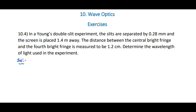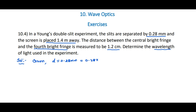Problem 10.4: In Young's double slit experiment, the slits are separated by 0.28 mm and the screen is placed 1.4 m away. The given values are d = 0.28 mm, that is 0.28 × 10⁻³ m, and capital D = 1.4 m.